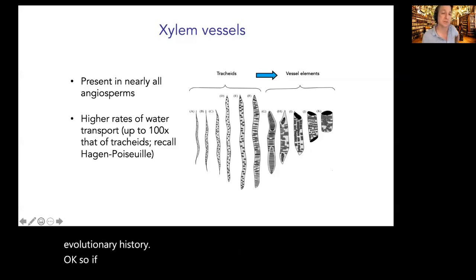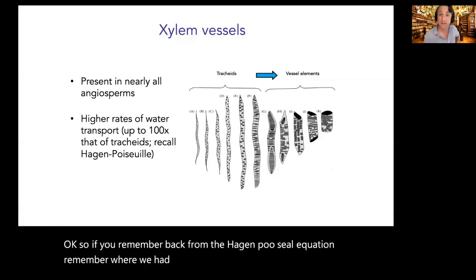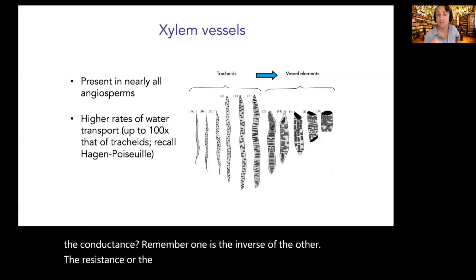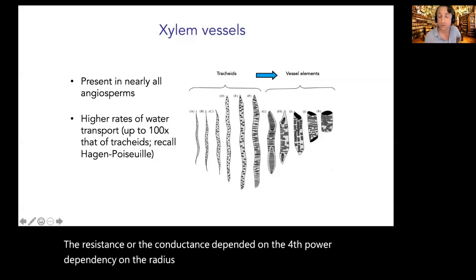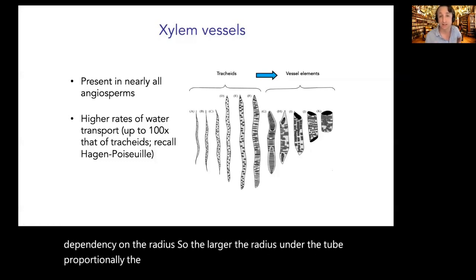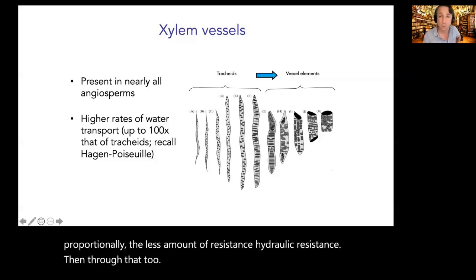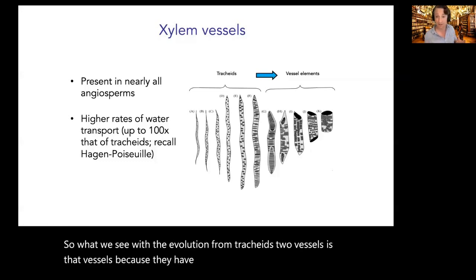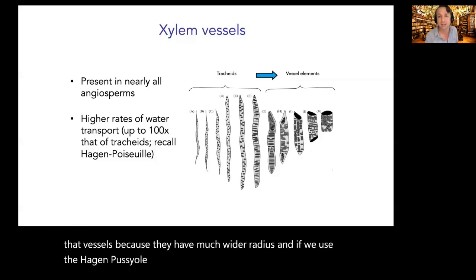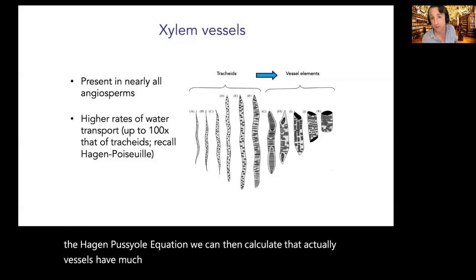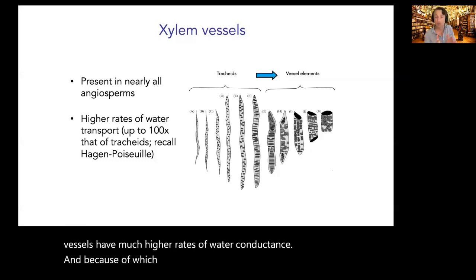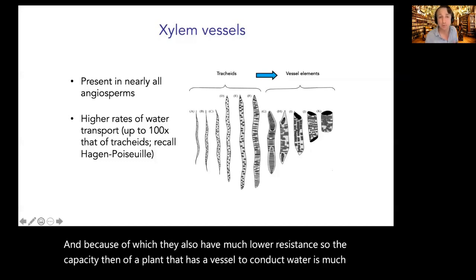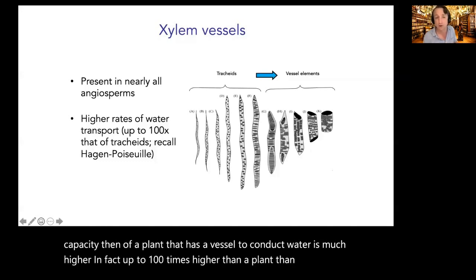Recall the Hagen-Poiseuille equation — resistance and conductance are inverses of each other, and both depend on the fourth power of the radius. The larger the radius of a tube, the less hydraulic resistance through that tube. With the evolution from tracheids to vessels, because vessels have a much wider radius, they have much higher rates of water conductance and much lower resistance — up to 100 times higher than plants with only narrow tracheids.